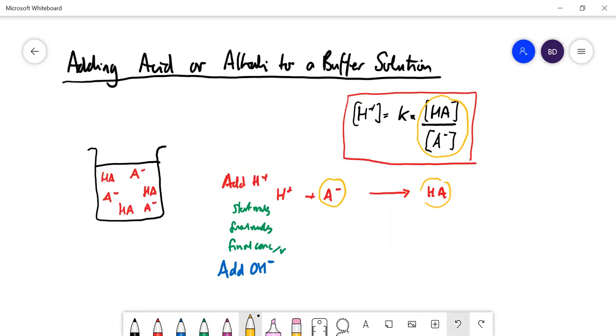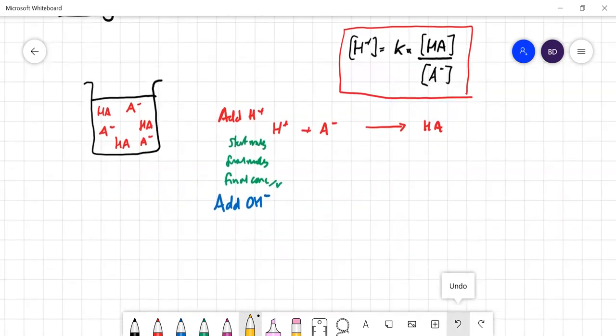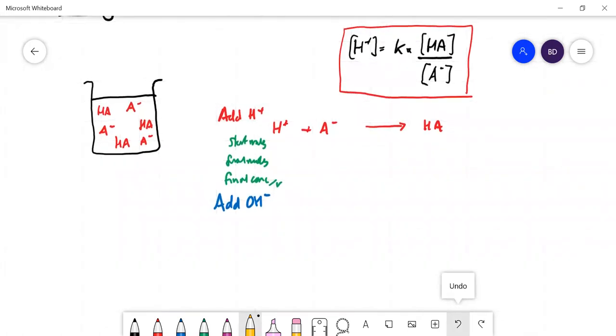Now with the alkali, which species will the alkali react with? Well, it doesn't react with A-, it's going to react with HA.